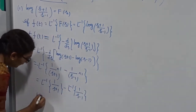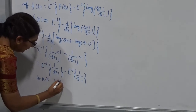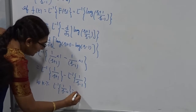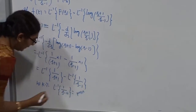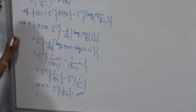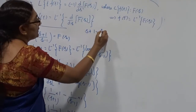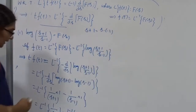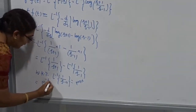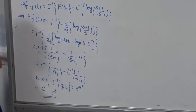We know the standard formula: L⁻¹ of 1/(s−A) = e^(At). In the first term, s+1 can be written as s−(−1), so the result is −e^(−t). The second term gives −e^(t). Therefore, t·f(t) = −e^(−t) − e^(t). This is how to find the inverse of log((s+1)/(s-1)).